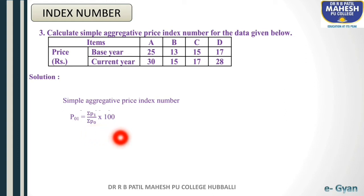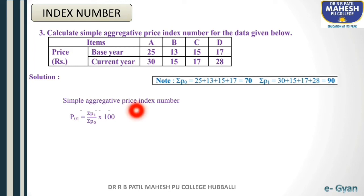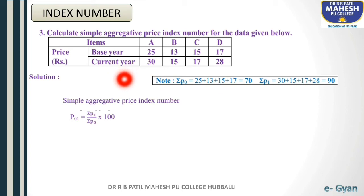To find out the simple aggregative price index number, we need the total of current year price as well as base year price. These are the base year price values, denoted P0. The values are 25 plus 13 plus 15 plus 17, so summation P0 total is 70.